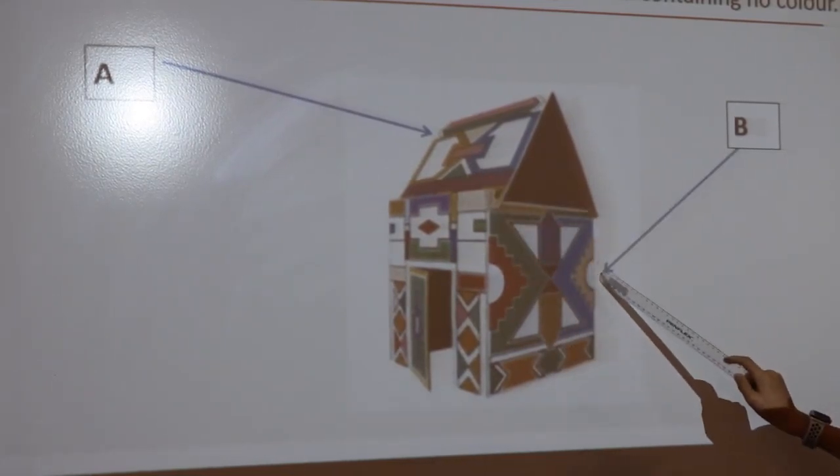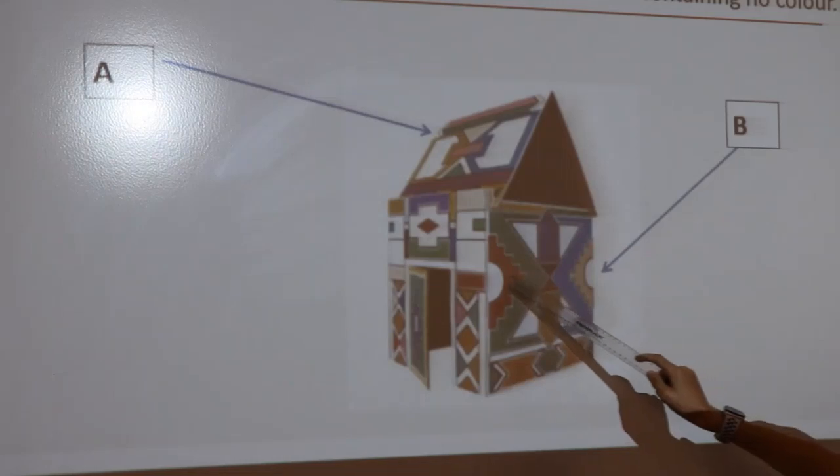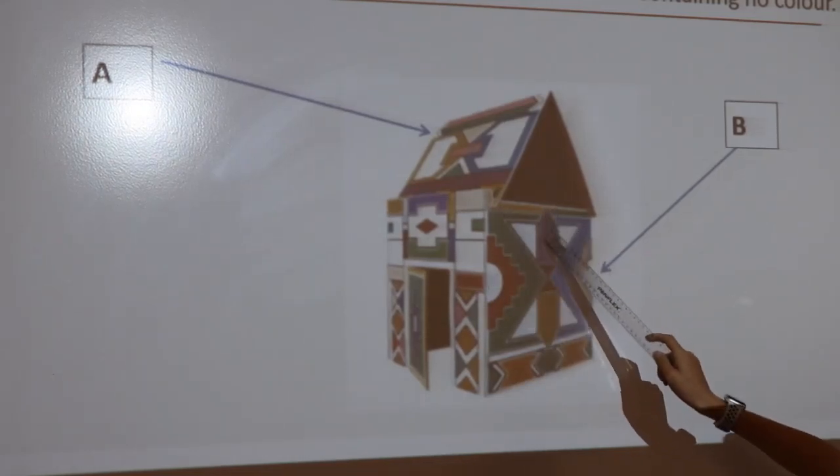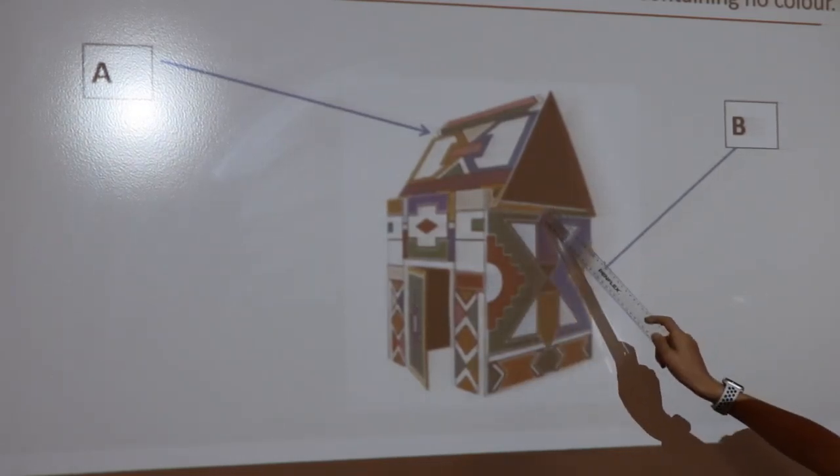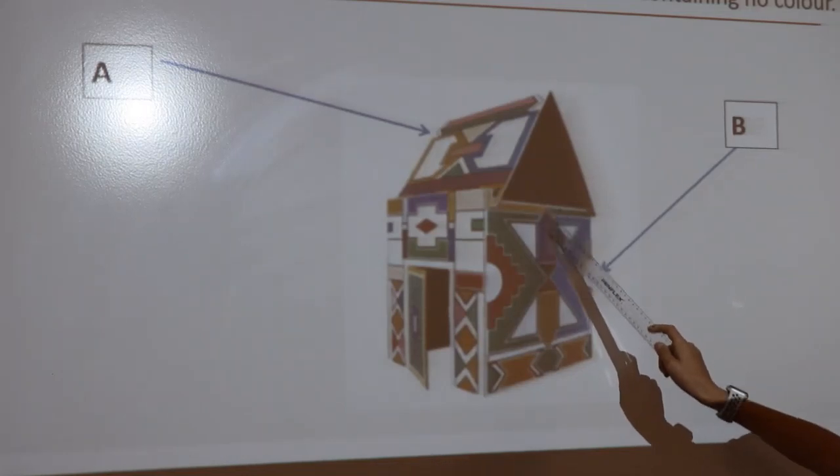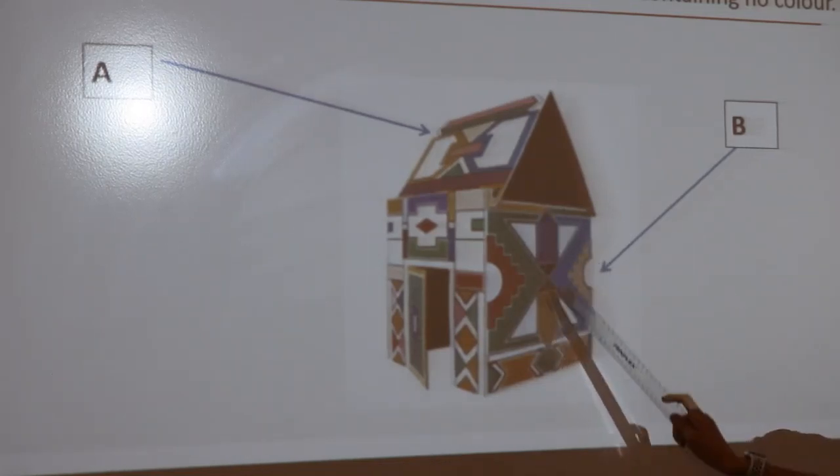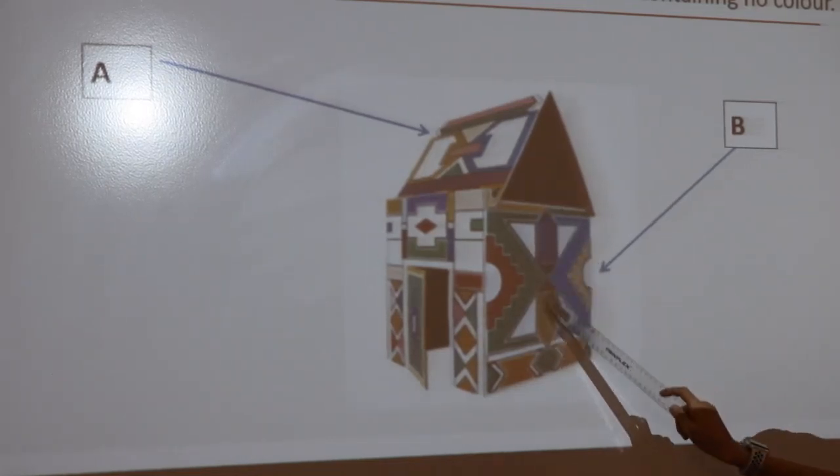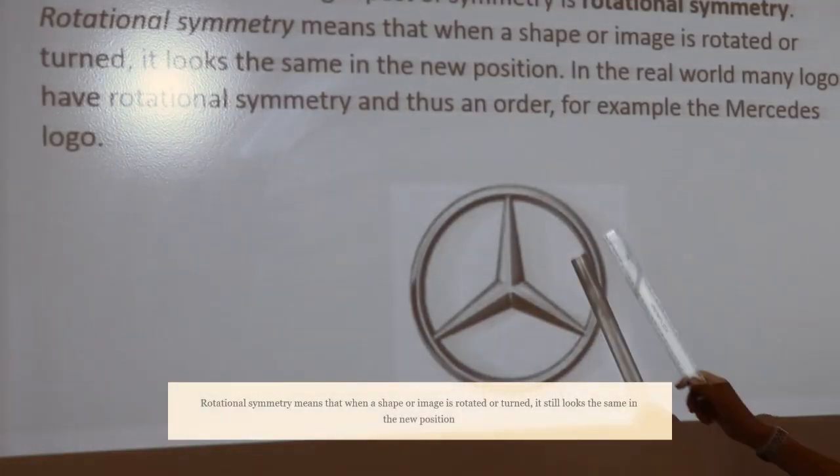On panel B, it is symmetrical going across because these two sides match, and it's symmetrical going vertically because these sides match.